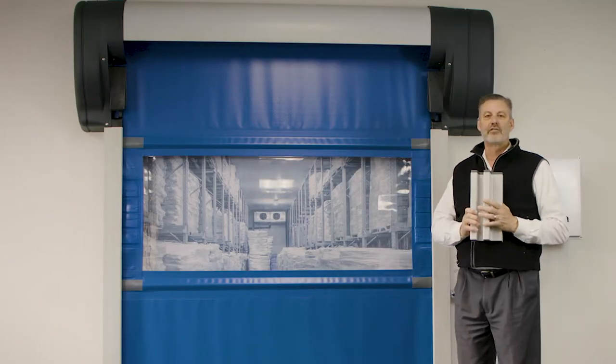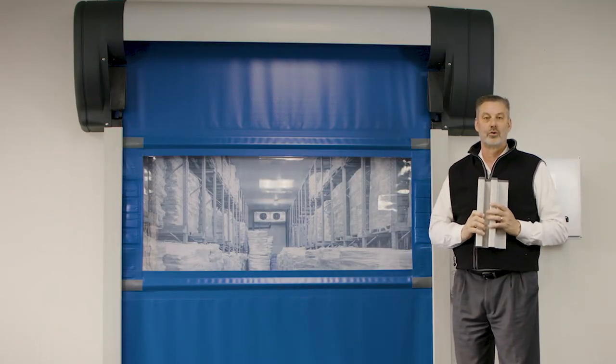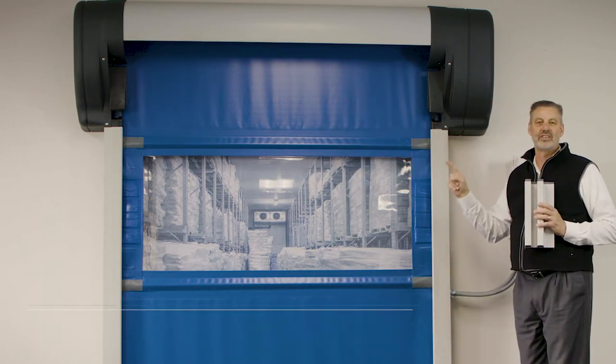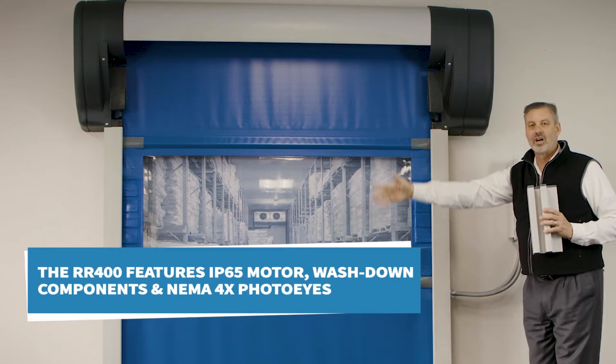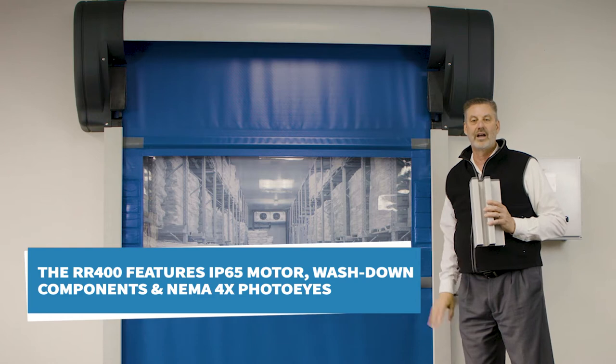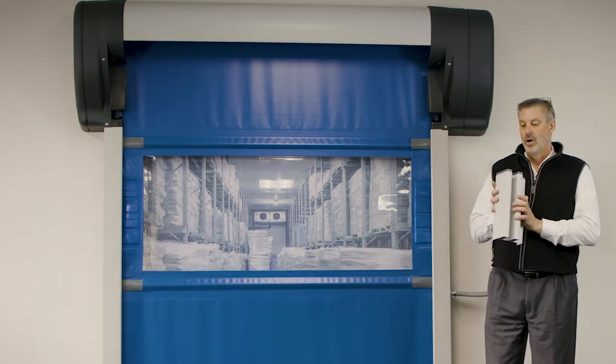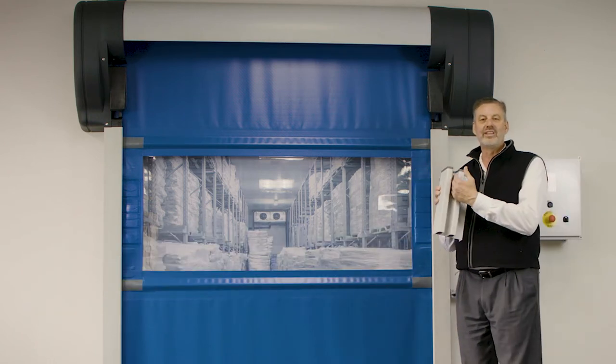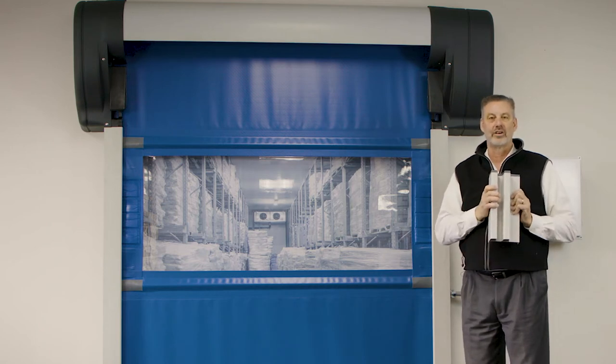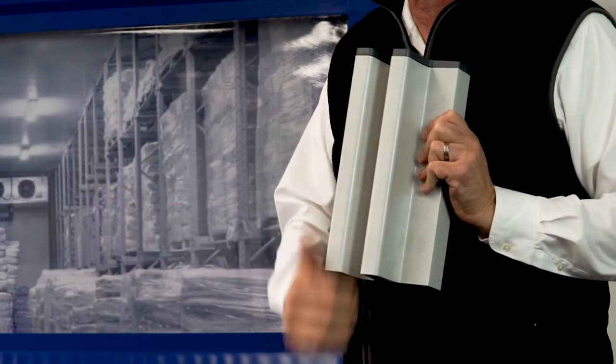What makes the RR400 a really good wash down door? As a standard door, it's an IP65 rated motor, wash down components, clean room door, NEMA 4X photo eyes, everything is there as a base door. What do we do that's different? The open guide allows you to get in here and clean. There's nowhere for bacteria to hide and to build up, so it's easy for you to clean.